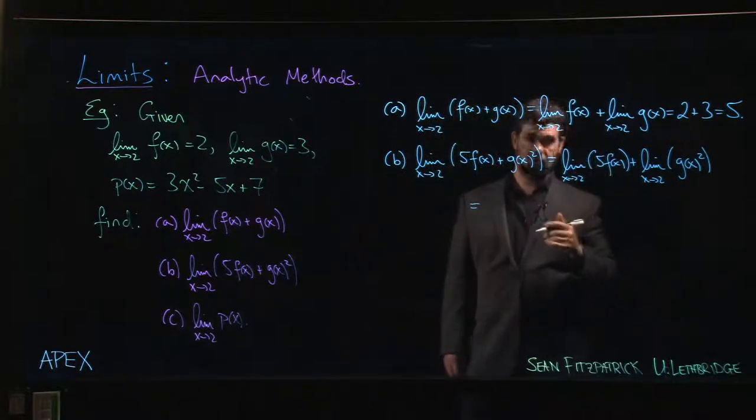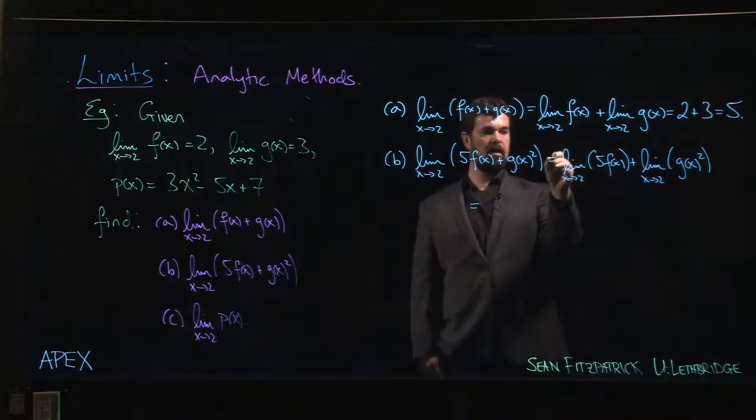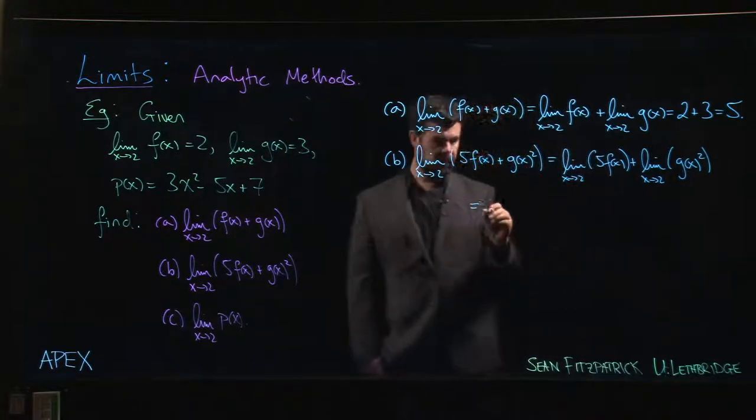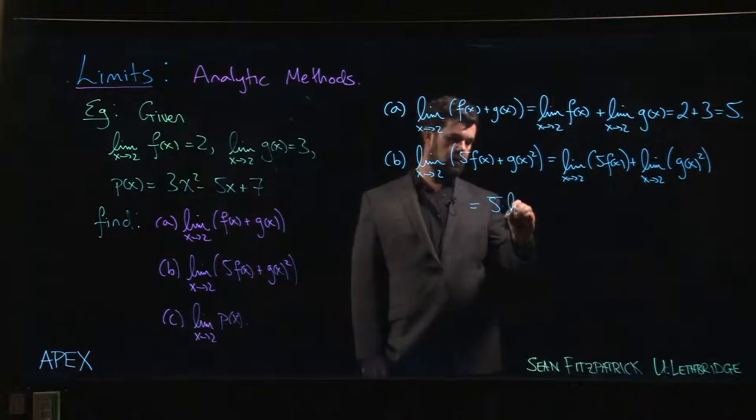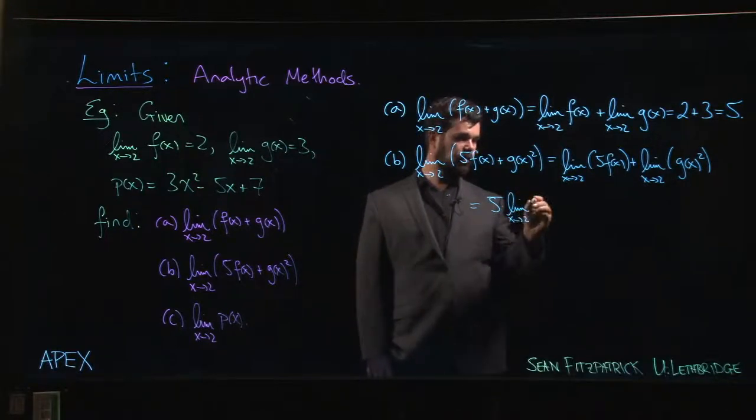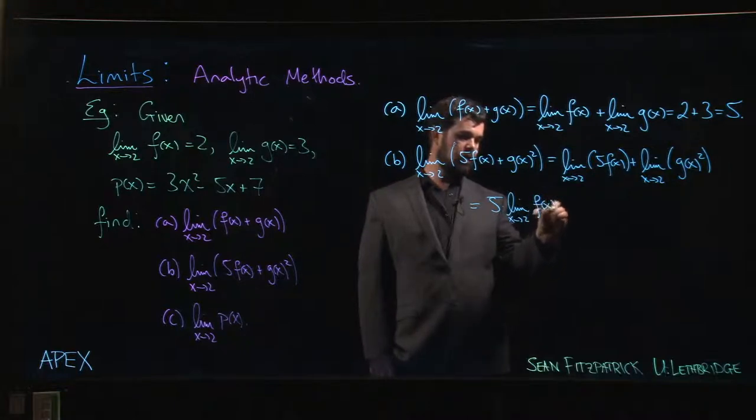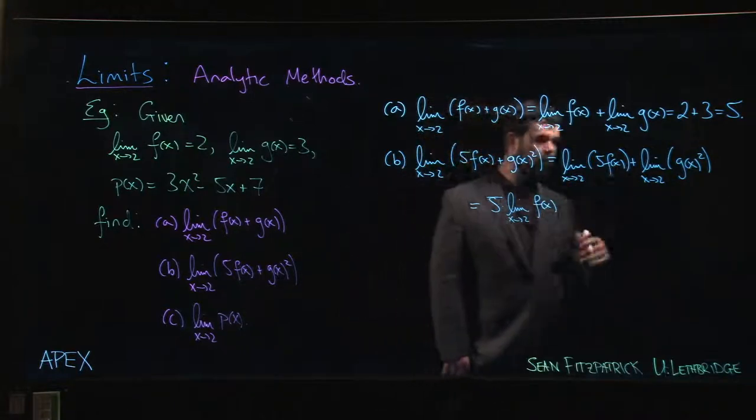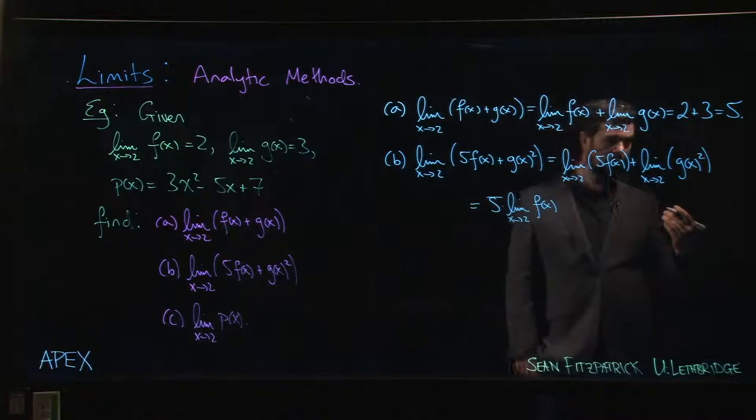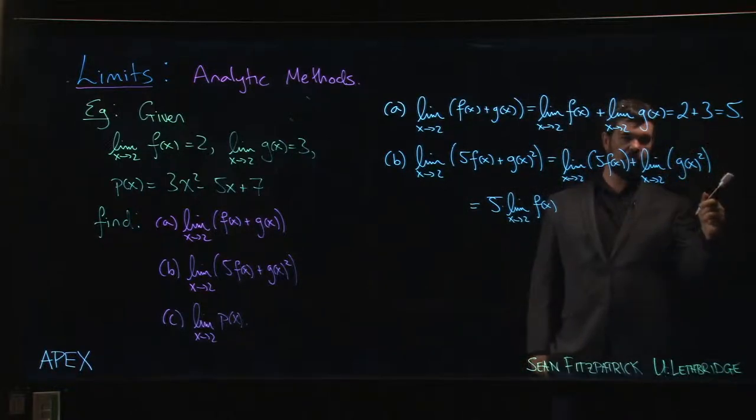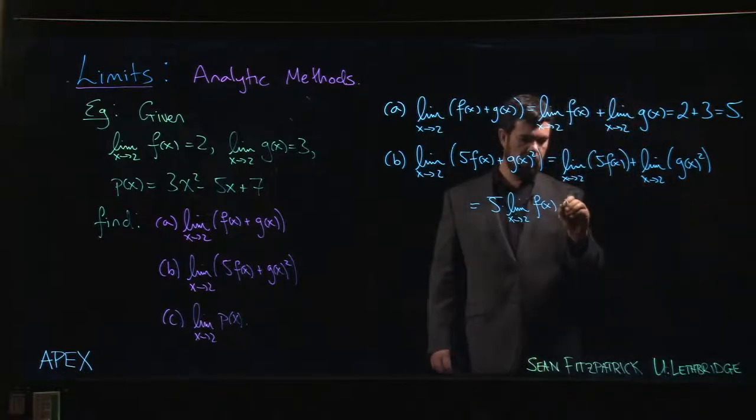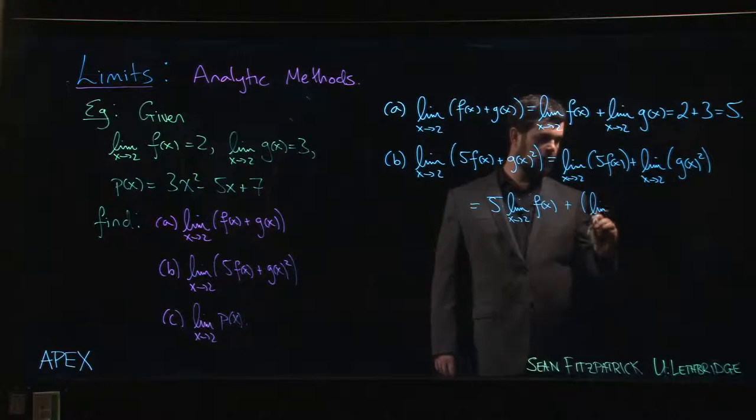In that first one, we can now apply the product rule—the limit of 5 times the limit of f(x)—or we can think of it as the constant rule, saying that if you have a constant you can bring it out front of the limit. So we can write that as 5 times the limit as x goes to 2 of f(x). The second one, again you can think of that as a product rule if you want: g(x) squared is g(x) times g(x), so it should be the limit of g(x) times the limit of g(x), or you can think of it as the power rule.